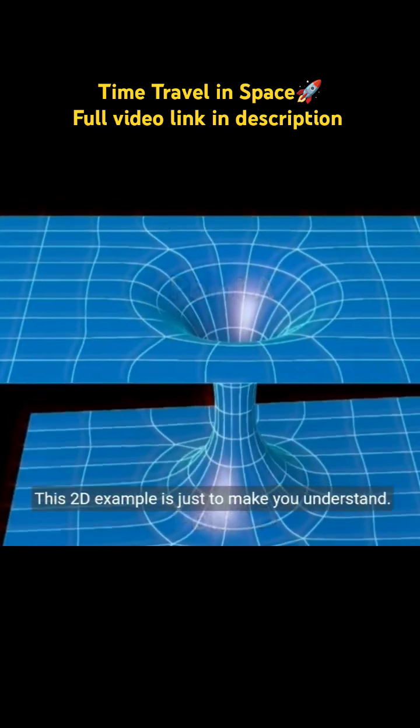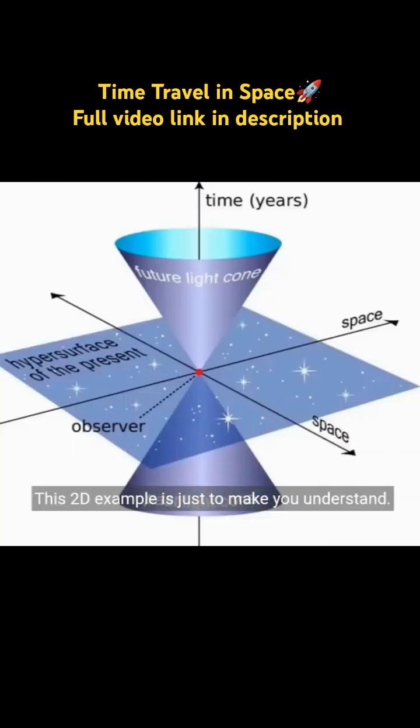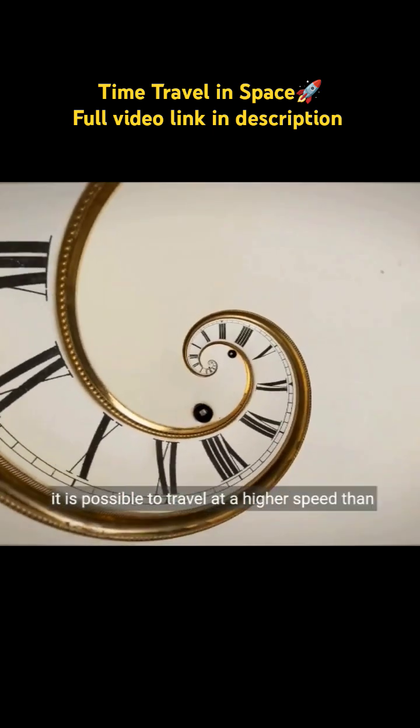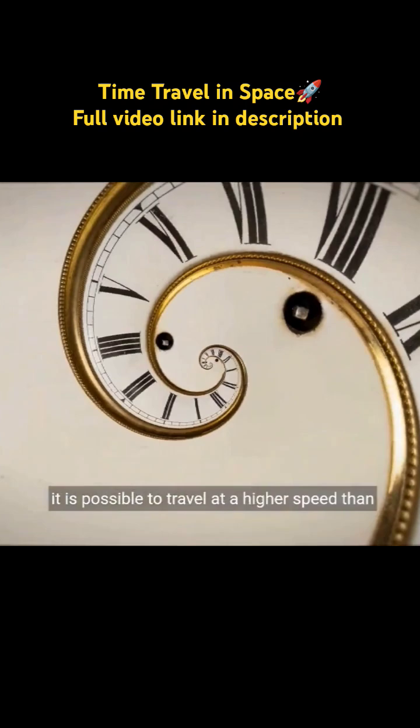The same is true for this universe. This 2D example is just to make you understand. But this universe is in four dimensions, so since the distance here is very small, it is possible to travel at a higher speed than light.